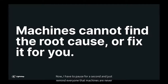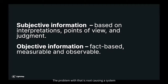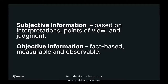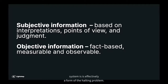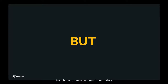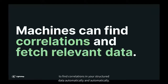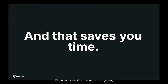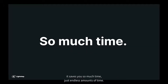I have to pause and remind everyone that machines are never going to actually be able to find the root cause for you — don't believe the AI ops hype. The problem is that root causing a system is subjective. You have to interpret the data and make judgment calls to understand what's truly wrong. Understanding what the root cause of your system is is effectively a form of the halting problem. But what you can expect machines to do is find correlations in your structured data automatically, and automatically finding these correlations and presenting them to you saves you a ton of time when you are trying to root cause the system. That's what makes tracing such a critical tool in your toolbox.